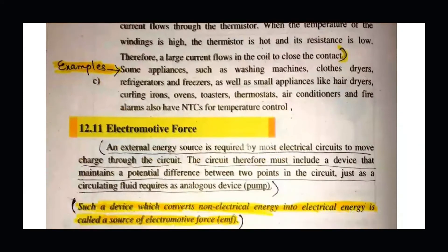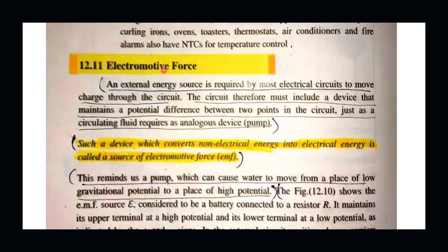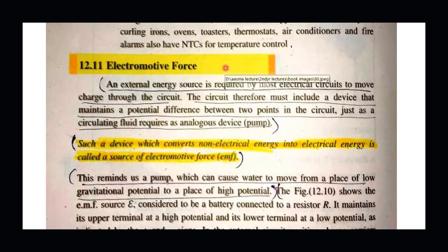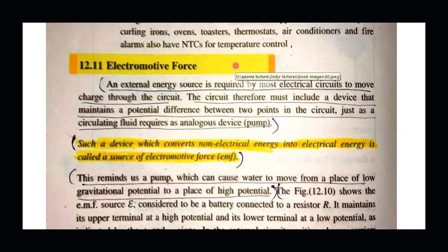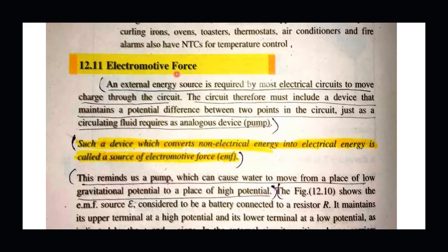Electromotive force is an external device or external source which provides energy to electrical circuits. We need external devices. For example, we use cells in clocks. If we remove the cell from it, the clock stops working. Similarly, wristwatches also use cells. These kinds of devices which help external circuits work on the basis of charge are known as electromotive force. So all external energy sources, the devices we use in electrical circuits, are always electromotive force.